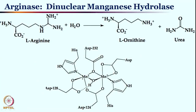You have one manganese center, another manganese center, both of them are in plus 2 oxidation state. You have this bridging aspartate between the two manganese centers and another aspartate bridging through only one oxygen atom of the carboxylate. The bridging shift from bi-coordination to mono-coordination can happen pretty frequently — in fact, sometimes this bi-coordination to mono-coordination shift occurs to provide space for the incoming substrate.